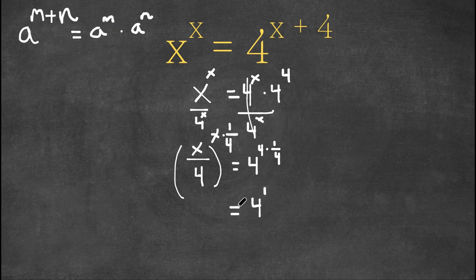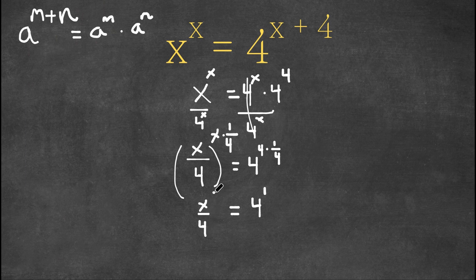So you have 4 to the power of 1 equals x times one-fourth, which is just x over 4. So we have x over 4 to the power of x over 4.